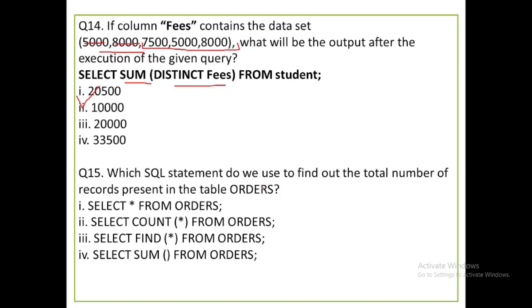Which SQL statement do we use to find out the total number of records present in the table ORDERS? SELECT * FROM orders returns the whole table but does not tell the number of records. SELECT COUNT(*) FROM orders is correct because COUNT(*) counts all rows from the table, including duplicates and null values.